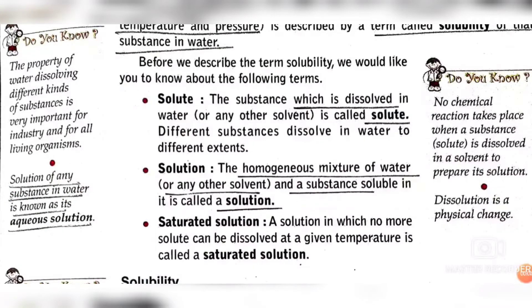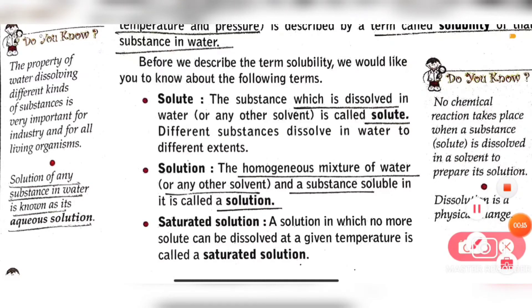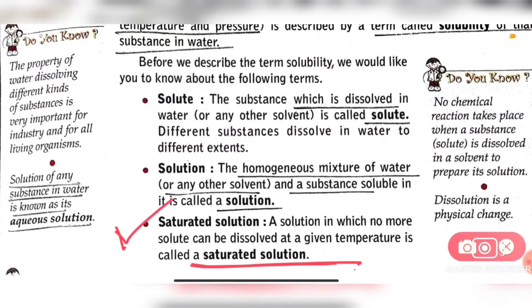As I told you, water cannot dissolve a limitless amount of solute — there is always a limit. The solution which is made up of the maximum amount of solute that water can dissolve is called a saturated solution. A saturated solution is one in which no more solute can be dissolved at a given temperature.